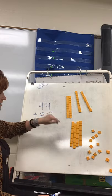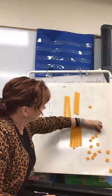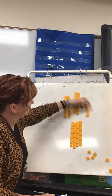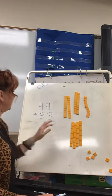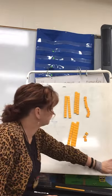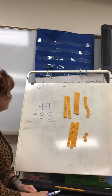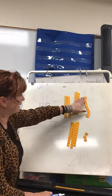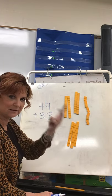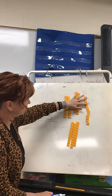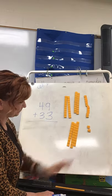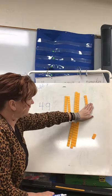Here's 49 with our tens and ones: 10, 20, 30, 40, and 1, 2, 3, 4, 5, 6, 7, 8, 9 — that's 49. And then 33: 10, 20, 30, 31, 32, 33. Now, nine ones plus three ones: 9 plus 3 is 12. We see 10, 11, 12 — we have two left over but we can make a ten.